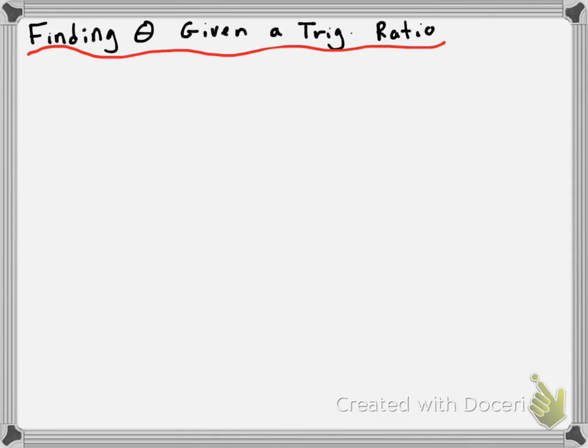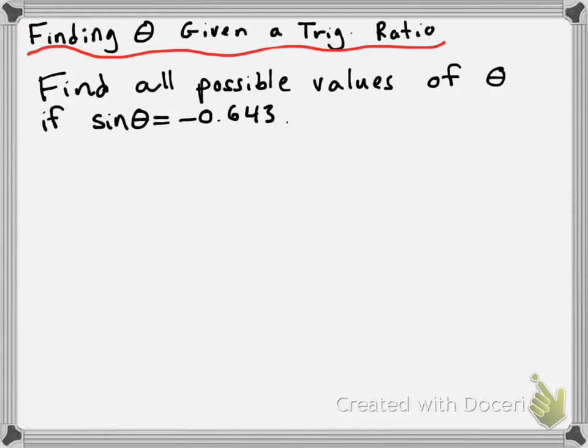I just feel like it would be something that people might benefit from seeing again and having it in a video, so you can kind of go back over. So, let's say that we wanted to find all possible values of some angle theta. If we know that the sine of theta is equal to negative 0.643.